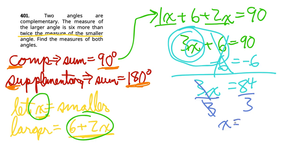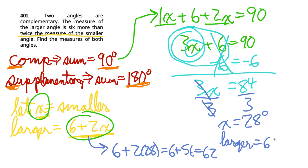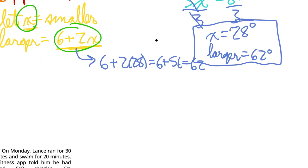So we have X equals, and then I'm just going to use a calculator. 84 divided by 3 is 28. So that's 28 degrees, and then if I plug the larger in, the larger would be 6 plus 2 times 28, which is going to be 6 plus 56, so that would be 62. So I'll just write larger equals 62 degrees. And again, box, circle, underline, or highlight your answers, so it's easy for your teacher to find.